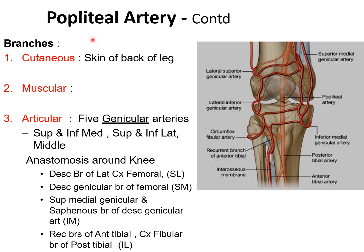The branches of the popliteal artery include: cutaneous branches supplying the skin of the back of the leg; muscular branches supplying adjacent muscles including branches to the gastrocnemius; and articular branches supplying the knee joint by five genicular arteries, which form an anastomosis known as the genicular anastomosis around the knee joint. This is very important.